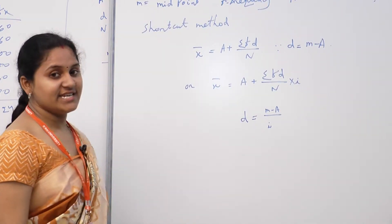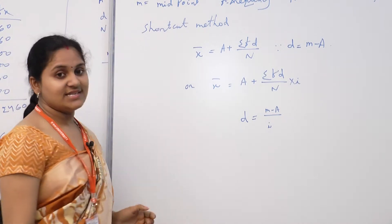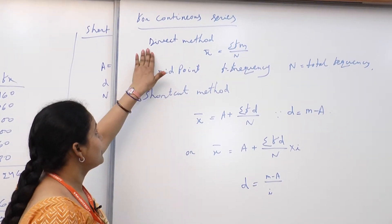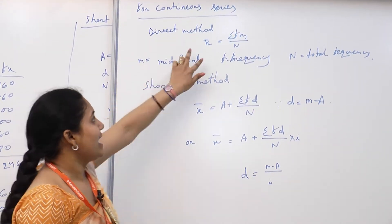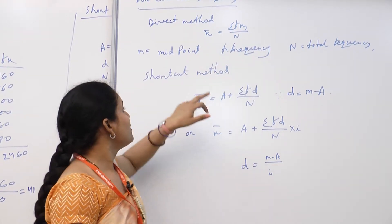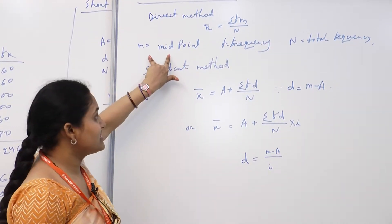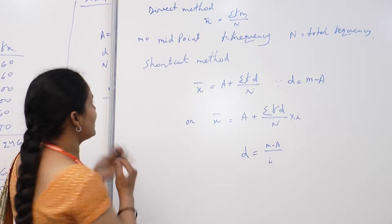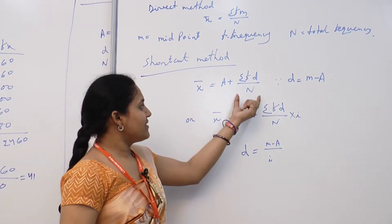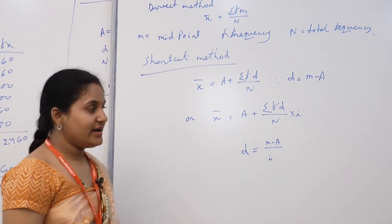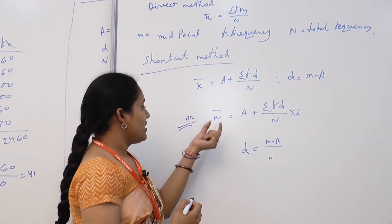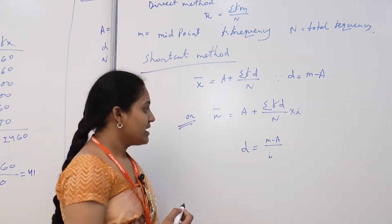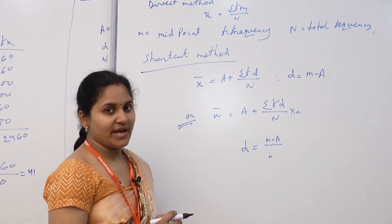Now for the continuous series — if data is given as 0 to 10, 10 to 20, and so on, this is called a continuous series. The direct method formula is x̄ = Σfm / n, where m is the midpoint of each class interval, f is the frequency, and n is the total frequency. For the shortcut method, the formula is x̄ = a + Σfd / n, where d = m − a, or alternatively x̄ = a + (Σfd / n) × i, where d = (m − a) / i.